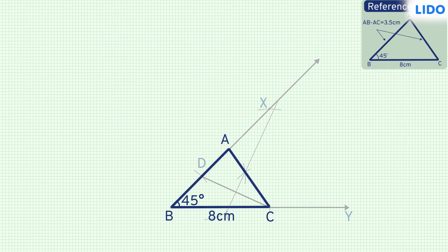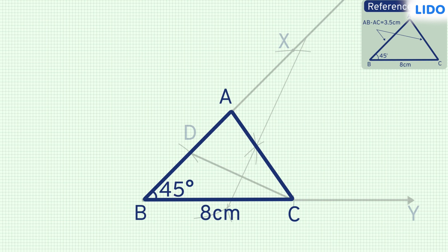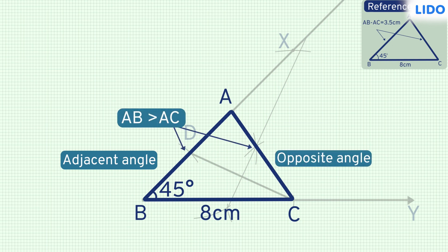And that's how we construct a triangle when the base, the base angle, and the difference between the adjacent and the opposite sides are given. The only thing to remember is that this method is followed when the unknown side adjacent to the given angle is greater than the side opposite to the given angle.